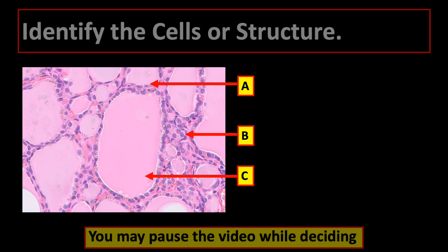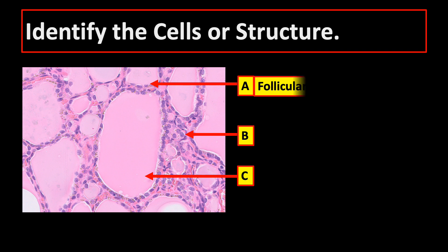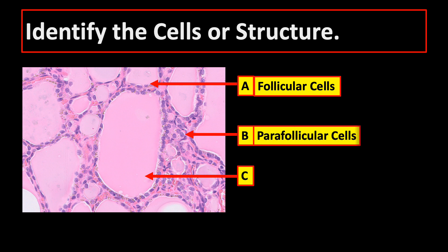Now let's try to identify some structures. Identify the pointed cells or structures. If your answer is follicular cells for A, parafollicular cells or C-cells for B, and colloid for C, then you got everything right. And that's the end of our lecture.